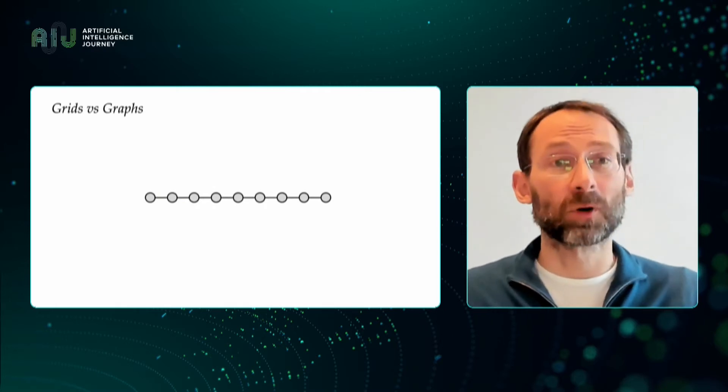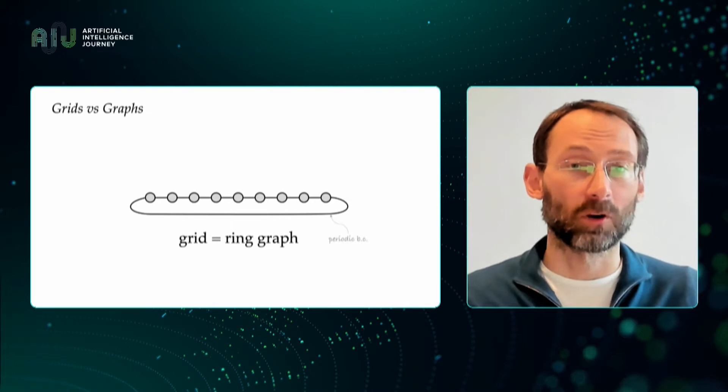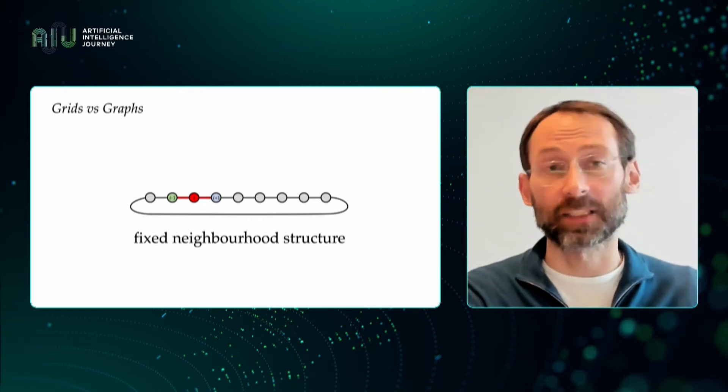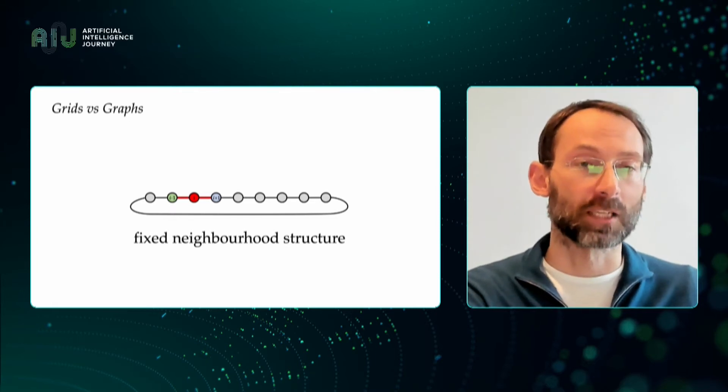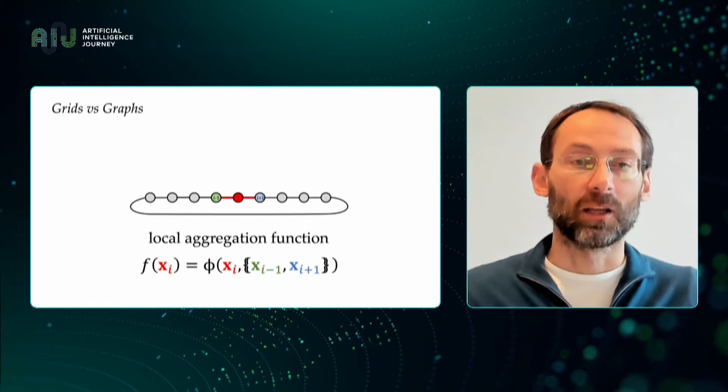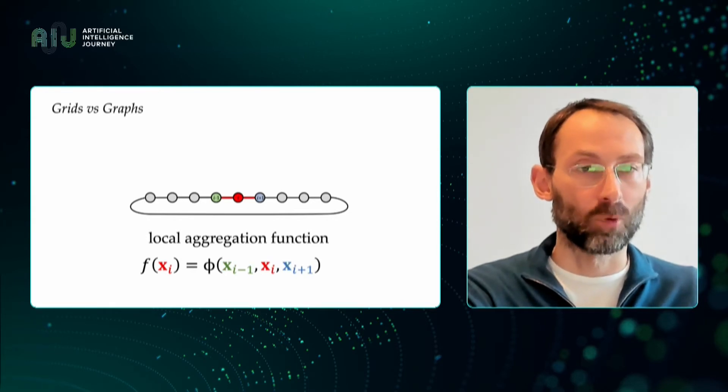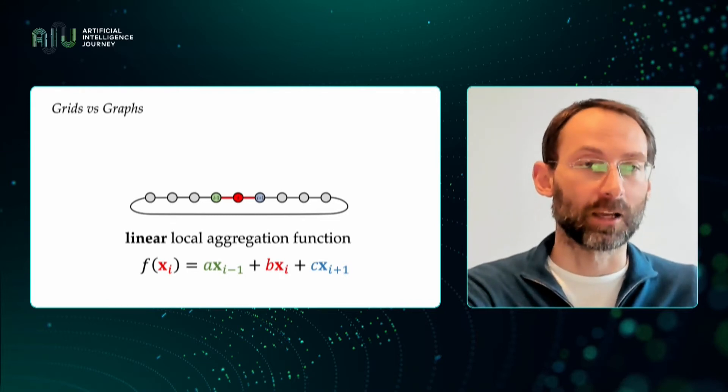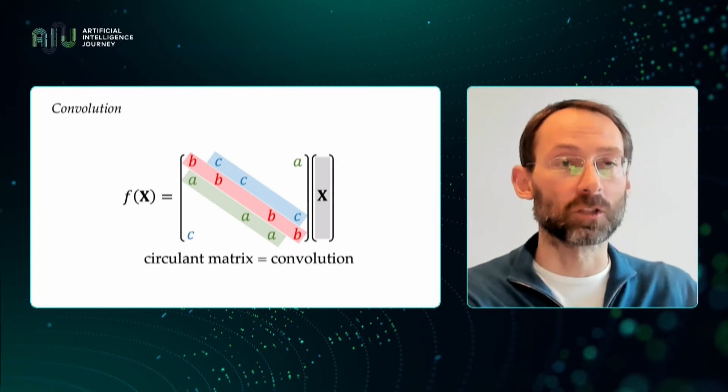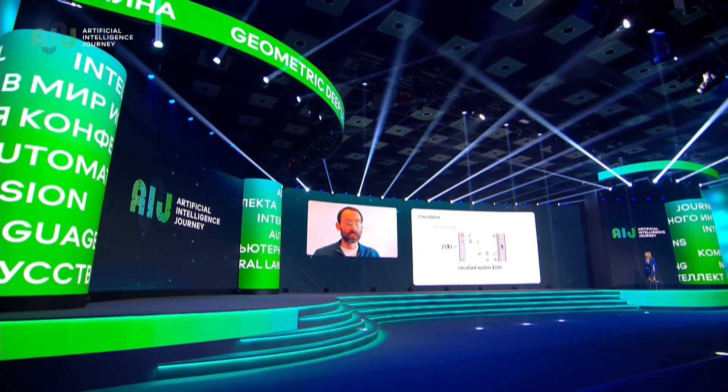I mentioned convolutional networks that work on grids. Grids are obviously also a particular case of graphs. This is an example of a grid with periodic boundary conditions that is called a cycle graph in graph theory. Compared to general graphs, the first thing that we notice on a grid is that it has a fixed neighborhood structure. In this case, every node has exactly two neighbors. Not only that, their ordering is fixed. I remind you that on a general graph, we have this permutation invariant aggregator function phi that was applied on a set of neighbors. But now we can actually order them so the function can be more specific. If we choose the aggregation to be linear, we get exactly the convolutional operation. If we write it as a matrix, it has a very special structure that is called a circulant or Toeplitz matrix. Basically, it's constant coefficients on the diagonals. It can be obtained by cyclic shifts of a fixed vector of coefficients. These are exactly the shared weights, the shared parameters that we've seen in convolutional neural network architectures.